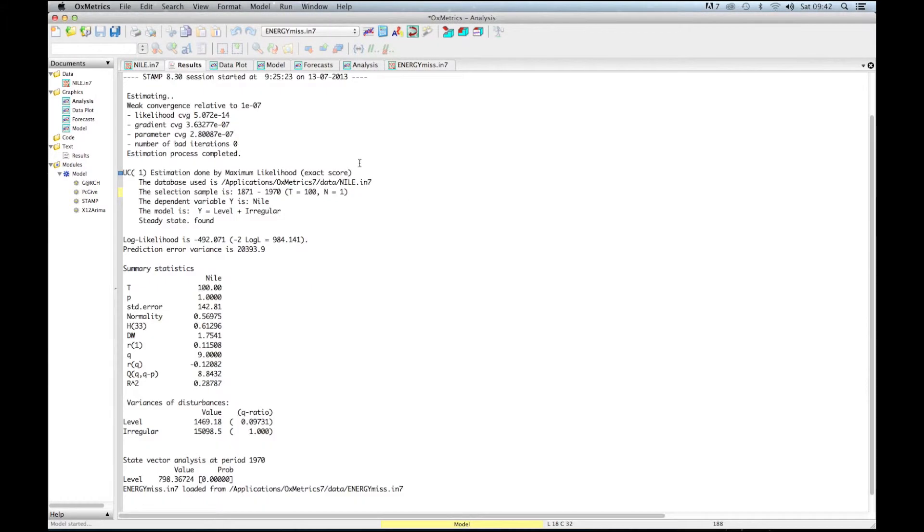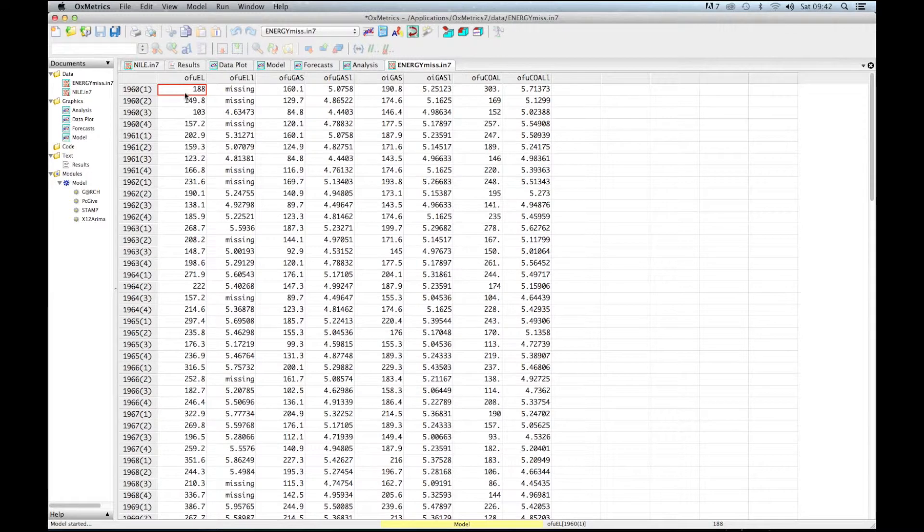This is also a default time series in the OxMetrics database. Now I'll show you the data. Here you can see in the first column we have OFUEL, which is basically the demand for electricity in a certain region in the UK, and here you can see we have some missing values in the second column.